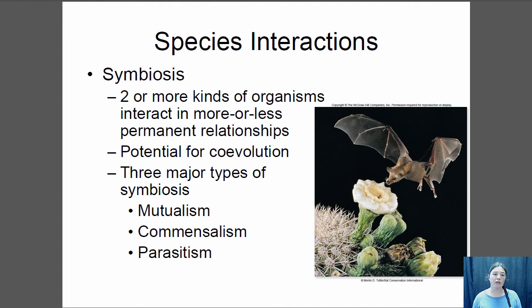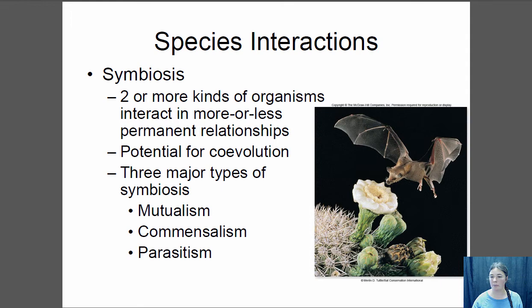Other important species interactions are what we call symbiosis — when two or more organisms exist together in more or less permanent relationships, always found associated with each other. Many symbiotic relationships also have potential for co-evolution. There are three different types of symbiotic relationships: mutualism, commensalism, and parasitism.